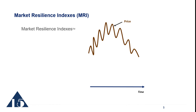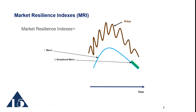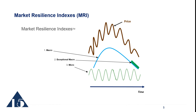The market resilience indexes show the broad long-term trend, which we call the macro trend of the market; the exceptional macro, which indicates a high potential for a trough in that longer-term macro market resilience index; and the micro MRI index, which represents the bursts of resilience that last from 6 to 18 weeks.